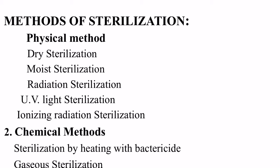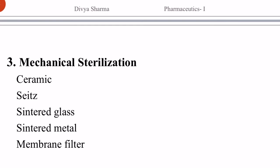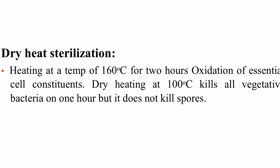In the physical method we will be talking about dry sterilization, moist sterilization, radiation sterilization, UV light sterilization, and ionizing radiation sterilization. In chemical methods, chemicals are involved — sterilization by heating with bactericides and gaseous sterilization. The third is mechanical sterilization, which uses cinematic sterilization, seed sterilization, sintered glass filters, sintered metal, and membrane filters.